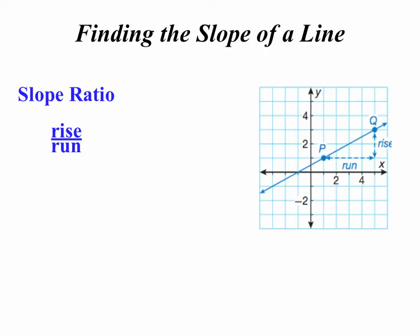Slope, very important. It's the measure of the steepness of a line. It can be positive, like in the case of this line. If the line were falling, it would have a negative slope. Horizontal lines have a zero slope. Vertical lines have undefined slope.